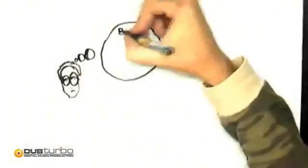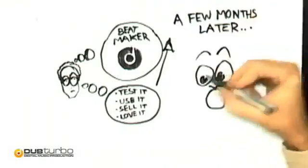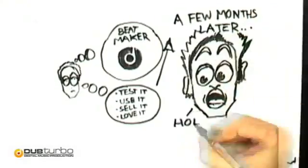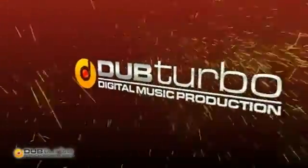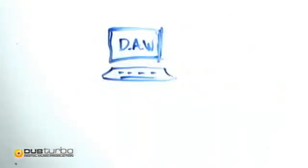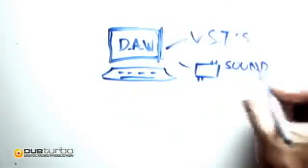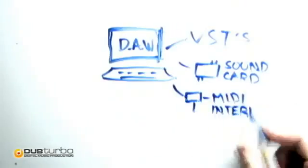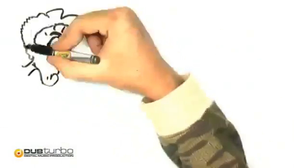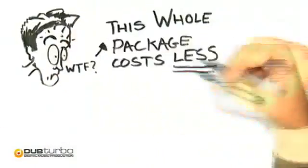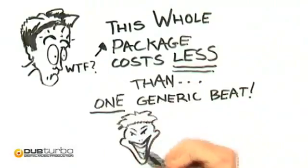We initially built this as an introductory tool for people getting into beat production on a small scale. Since then, we've outgrown our own vision and Dub Turbo has quickly become a mini powerhouse in the beat production space. What used to cost thousands — meaning a supercomputer, big name DAW software, VSTs, pro sound card, MIDI interface and keyboard, samples and kits, monitors, a mixer, wires, and more — is now all available for less than the cost of just one average royalty-free beat or kit.